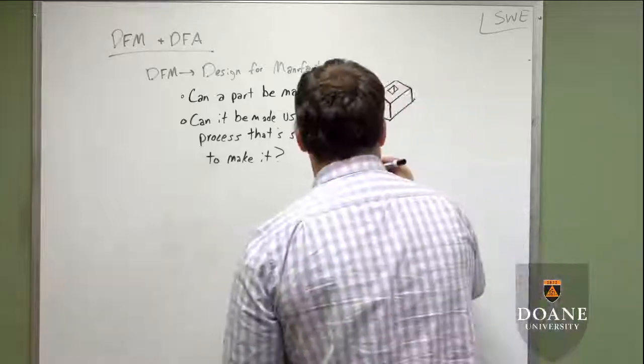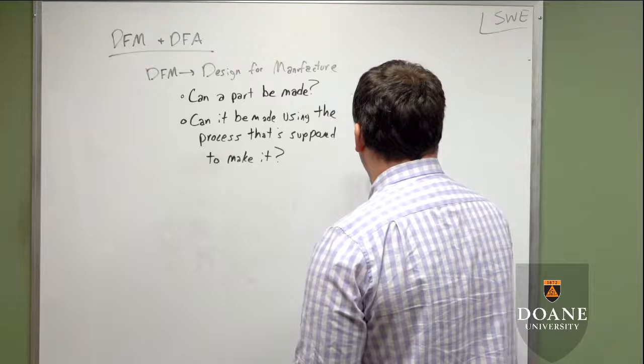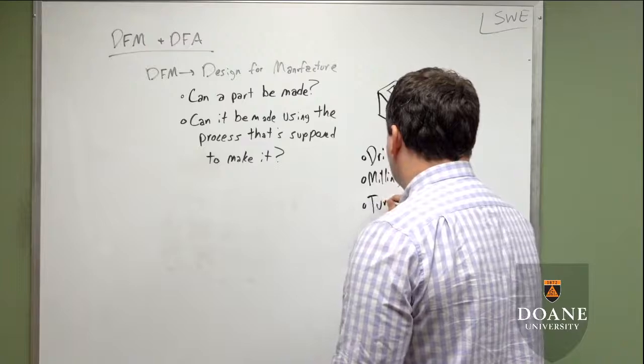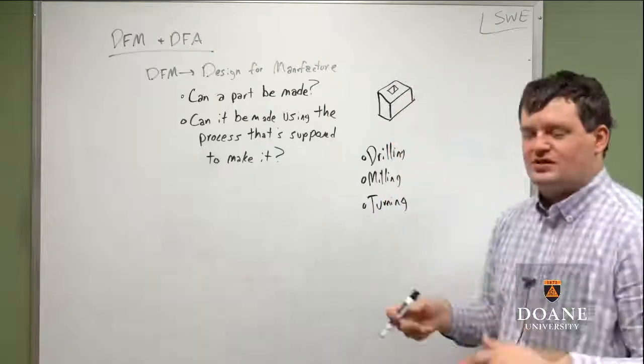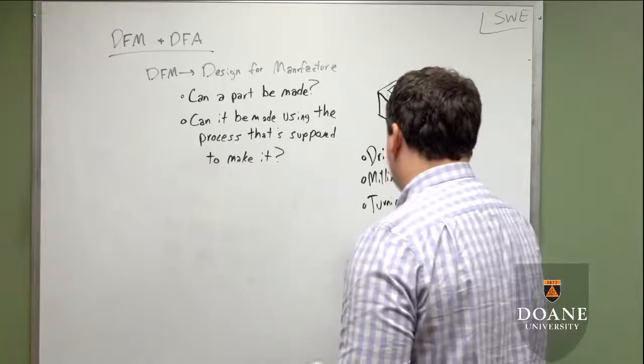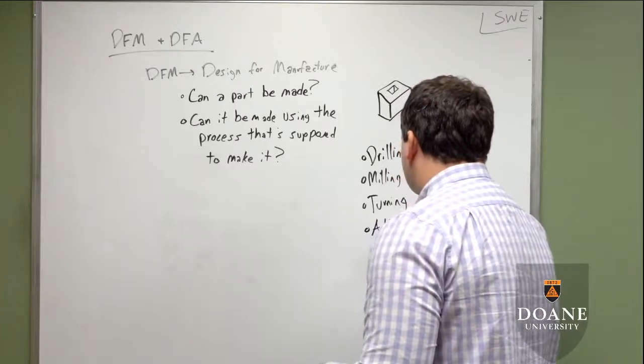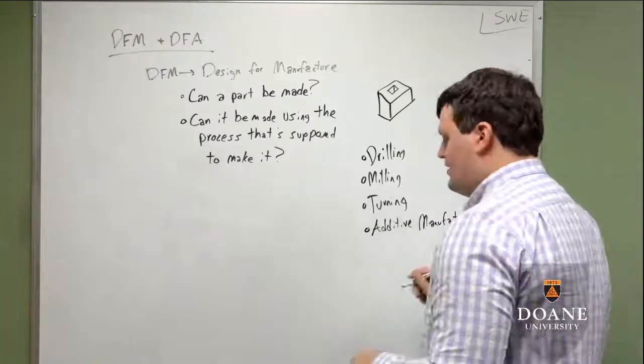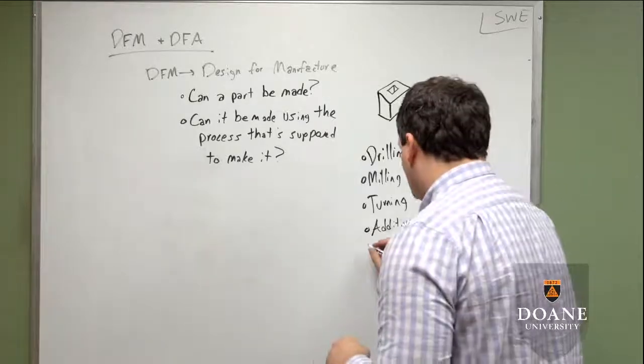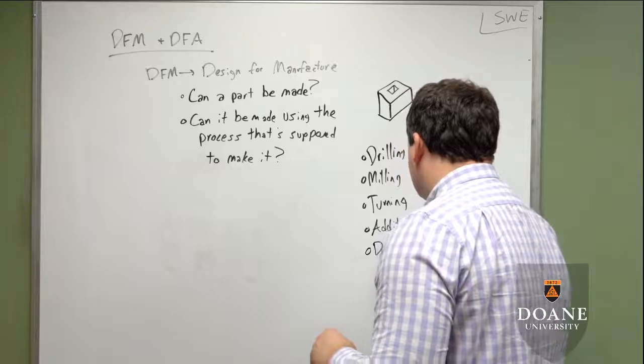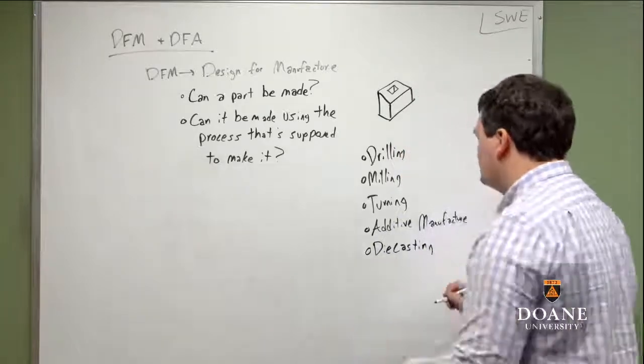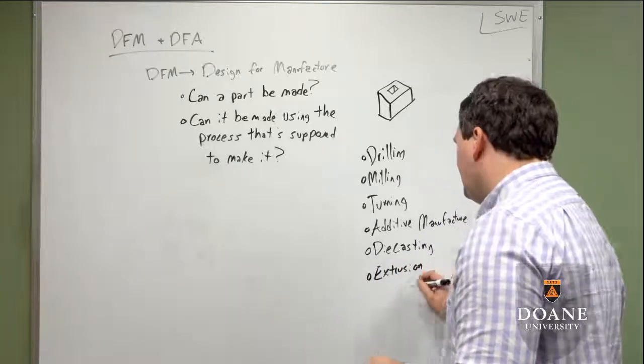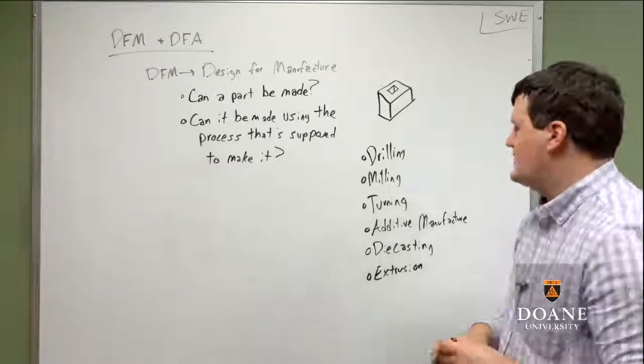Well, we have a couple operations. We have drilling. We have milling. We have turning, which is like lathe work, or reverse lathe work. You have additive manufacturing, which is 3D printing. You have die casting. And then you have extrusion. And there's a whole bunch of other manufacturing processes that can be used.